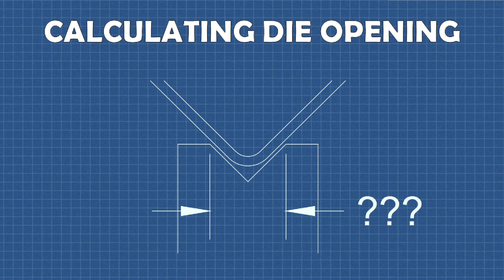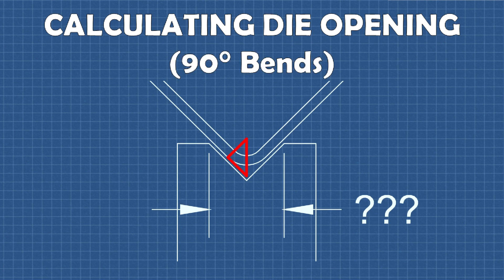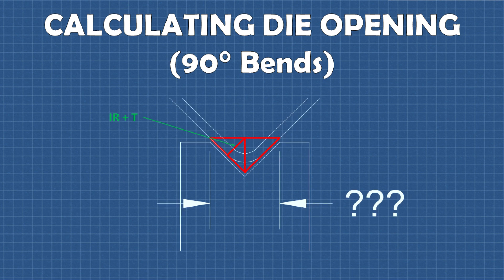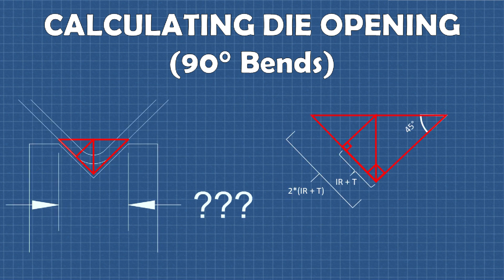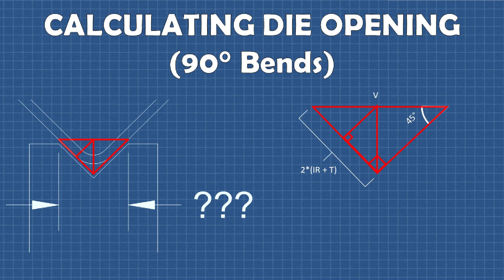First let's look at a simple 90-degree bend. The starting point and first triangle we will need looks like this, where we know the length of this leg is the inside radius plus the thickness. We can then use this triangle to solve for a larger triangle whose hypotenuse is equal to the optimal v-size or die opening. Since this is a 90-degree bend, these are 45-45-90 triangles, meaning two legs are equal. So both legs of this triangle are equal to the inside radius plus the thickness, and this leg is half the length of the larger leg, making the larger triangle leg equal to two times the inside radius plus the thickness.